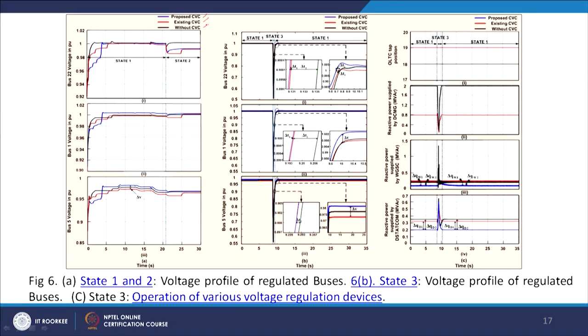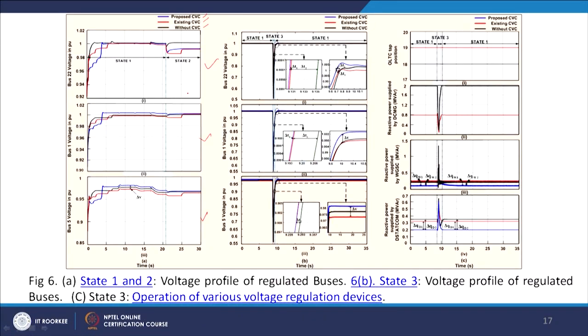The voltage profile is traced at different locations: bus number 22 — where we had both DSTATCOM and wind generator — bus number 5 where we had a DC microgrid, and bus number 1 where we had the OLTC. States 1 and 2 (steady state and dynamic state) have been considered and the voltage profile of regulated buses is plotted. A separate diagram shows state 3 (transient state) where the voltage profile of regulated buses is displayed at each bus.